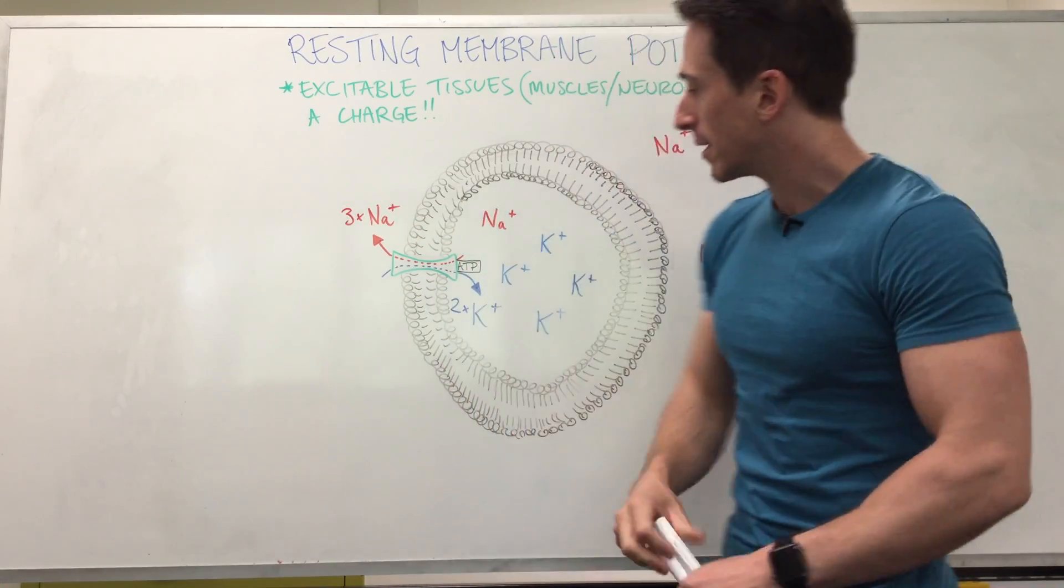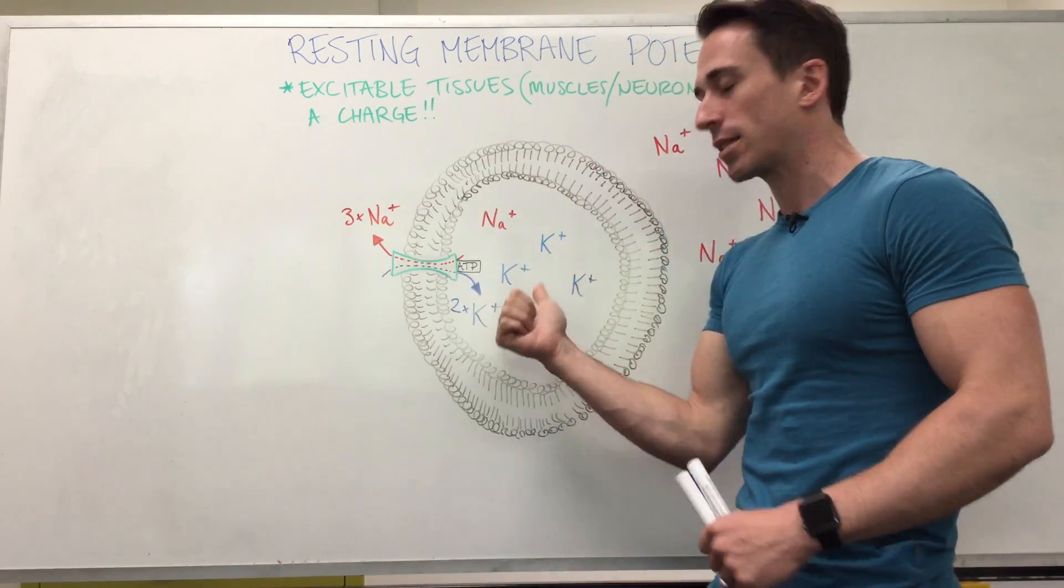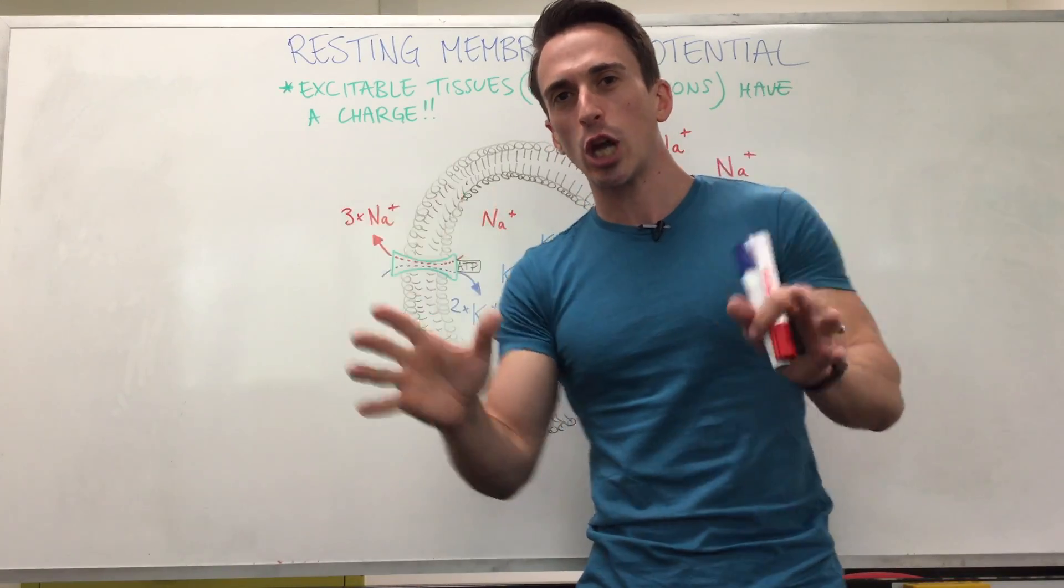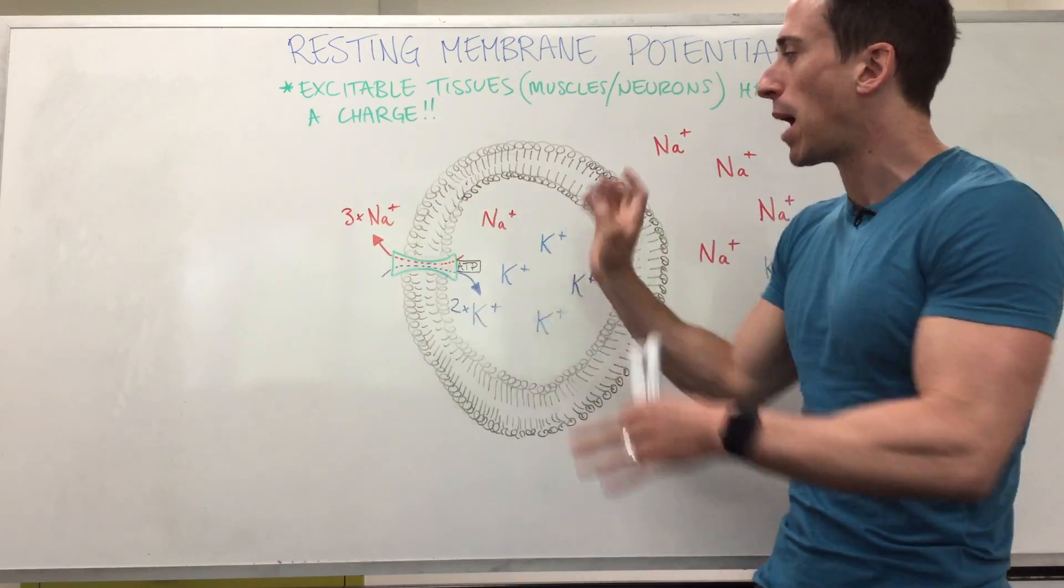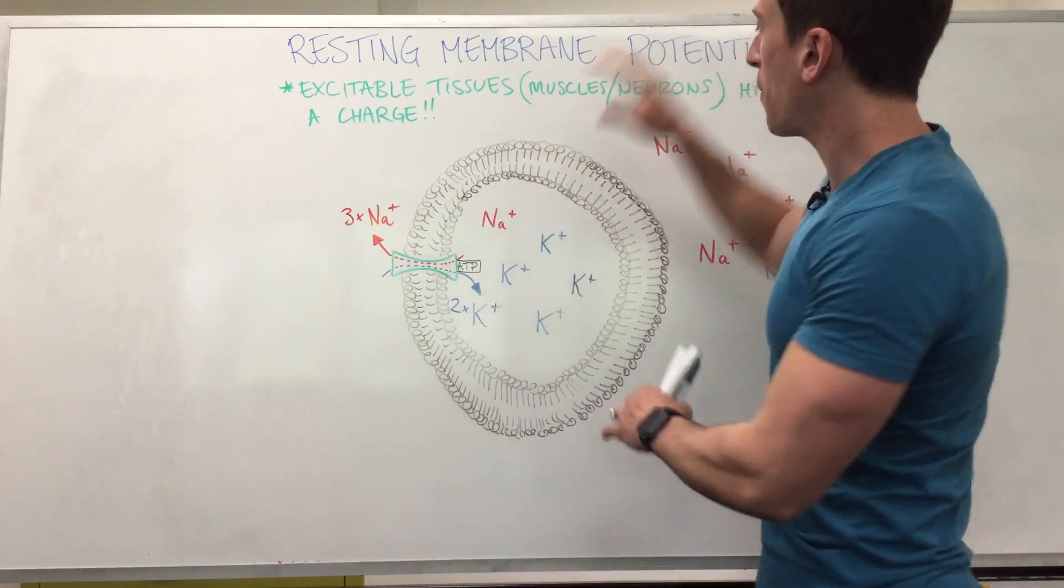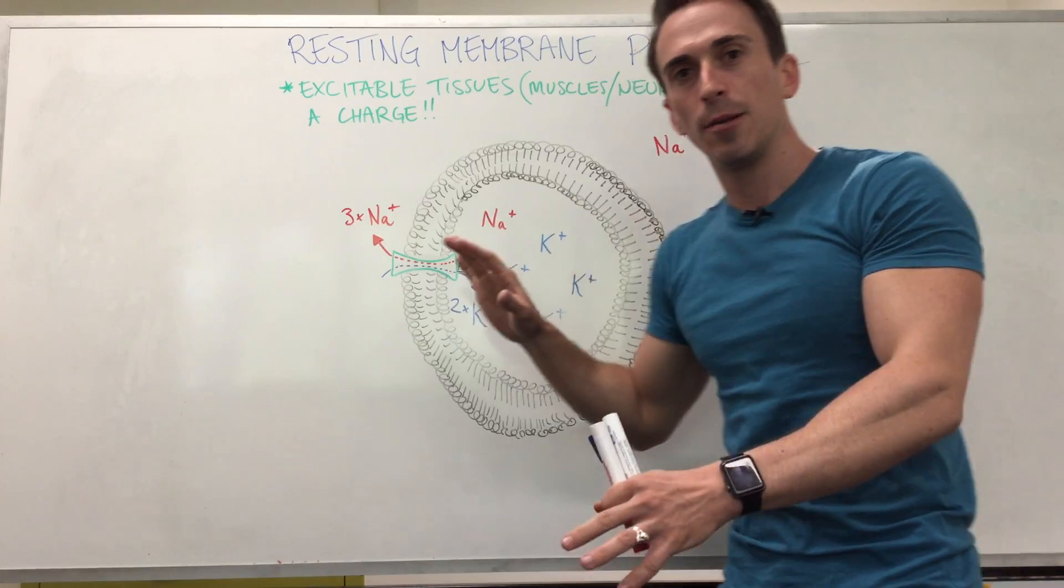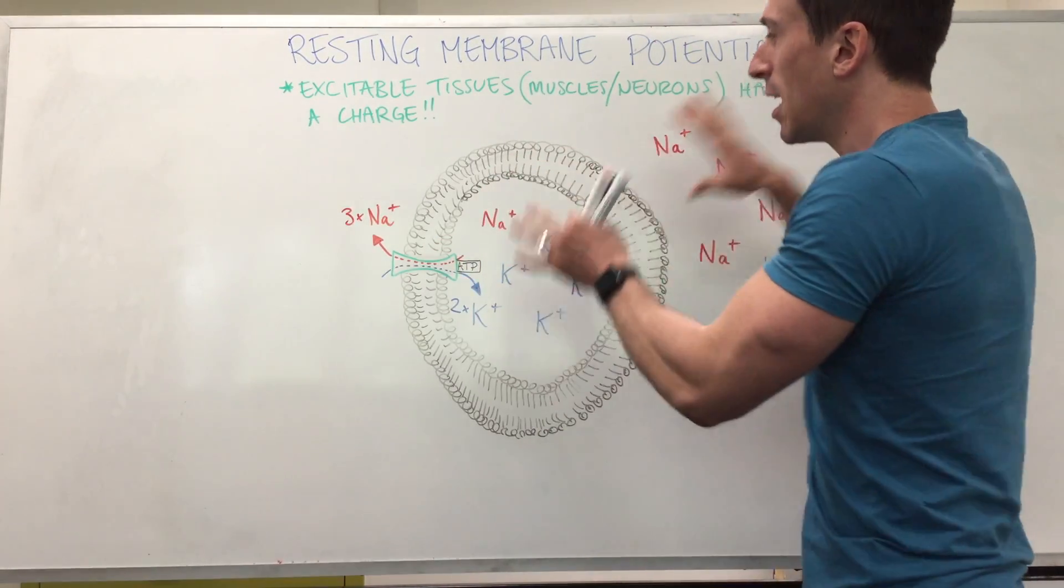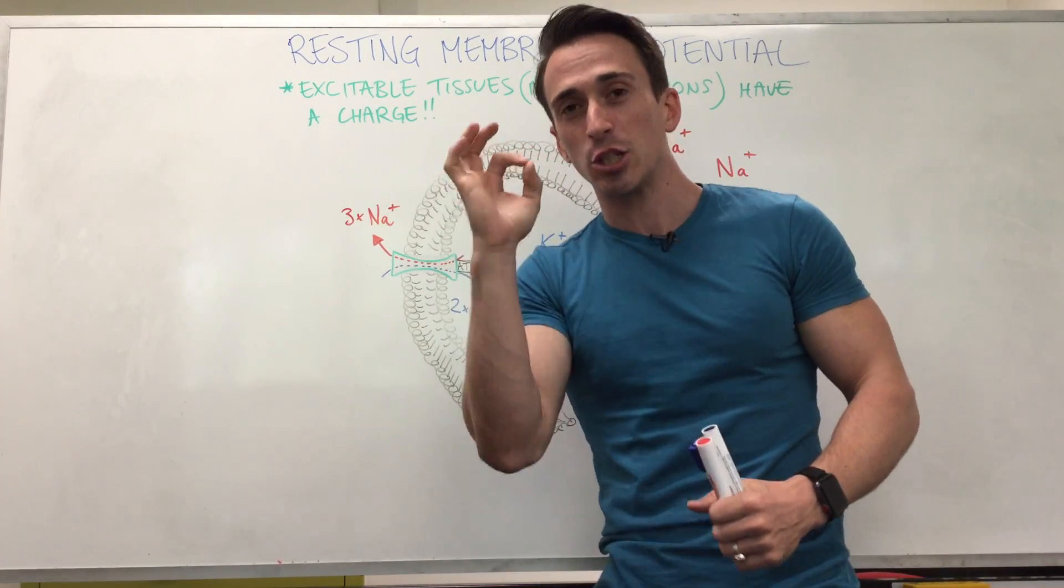What this pump specifically does is it takes three sodium, chucks it outside, takes two potassium, chucks it inside. Now I want you to think about what this may mean to the overall charge difference between the outside of the cell and the inside the cell. Before this began, before this pump happened, there's actually an even charge. It means if I added up all the positive ions outside and the negative ions outside and then compare them to the positive ions inside and the negative ions inside, the charge difference across the two would be zero. There's actually zero charge difference.